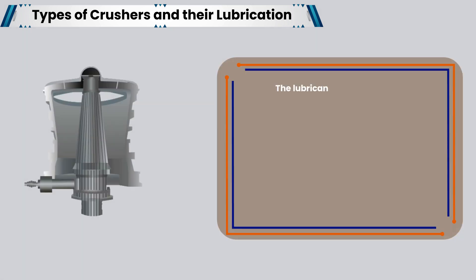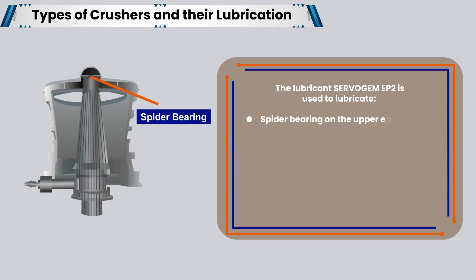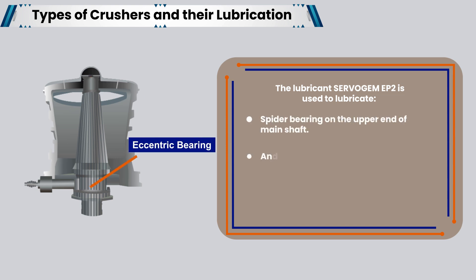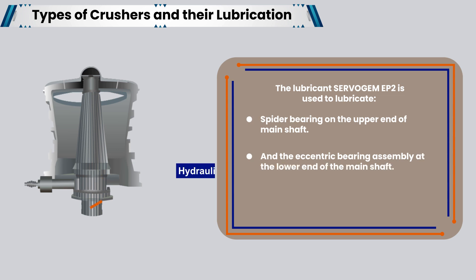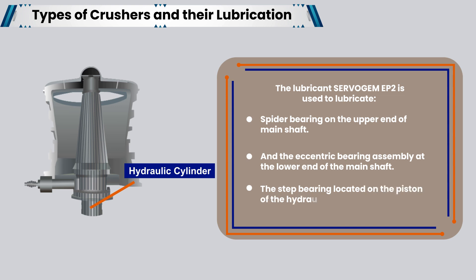The lubricant Servo GEM EP2 is used to lubricate the spider bearing on the upper end of the main shaft, the eccentric bearing assembly at the lower end of the main shaft, and the step bearing located on the piston of the hydraulic cylinder, which provides axial support for the main shaft.